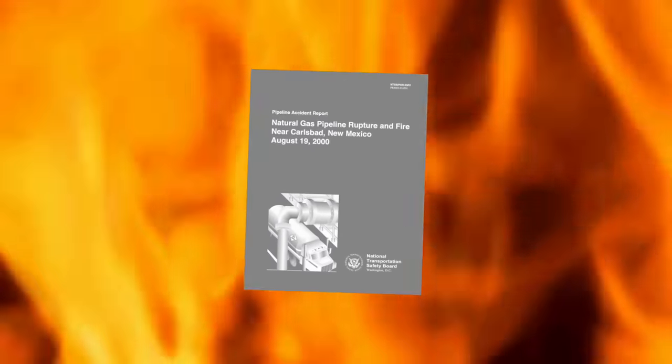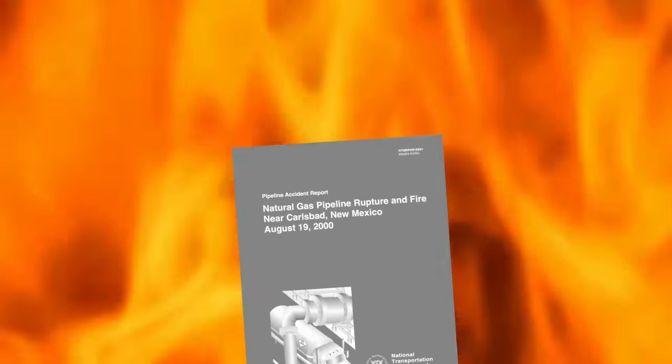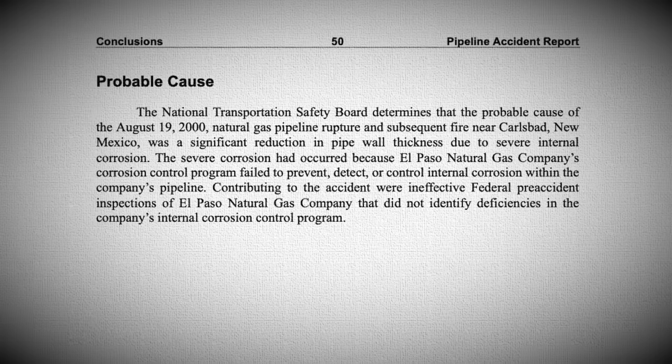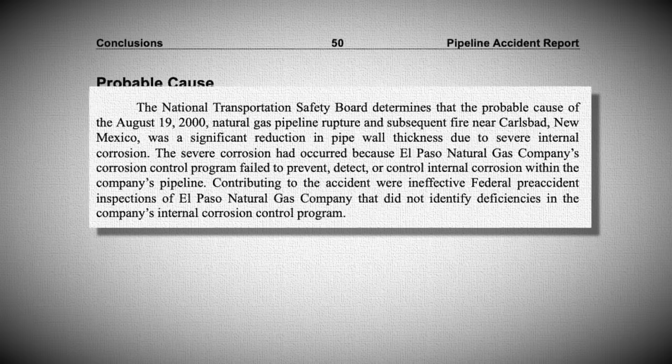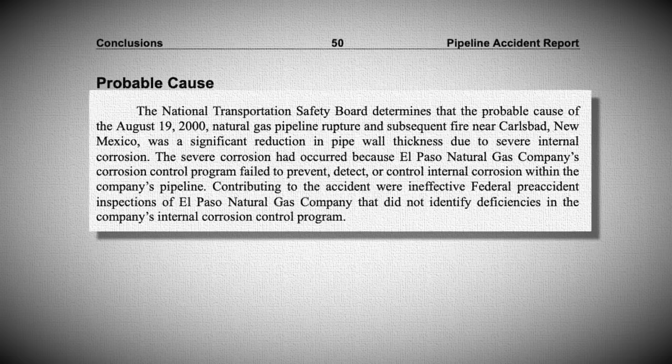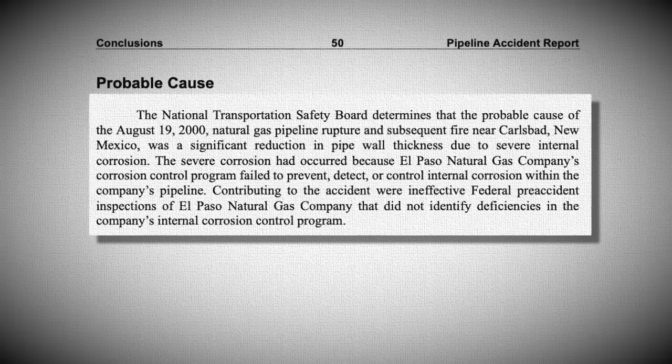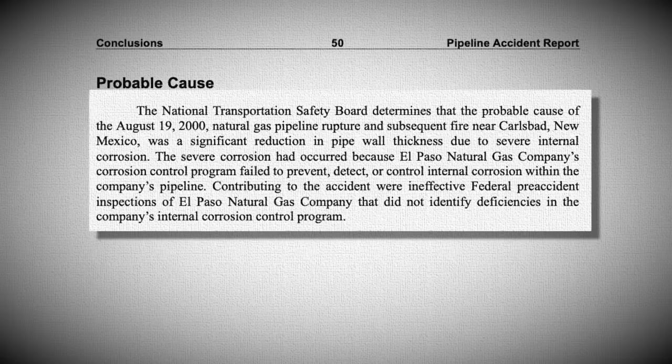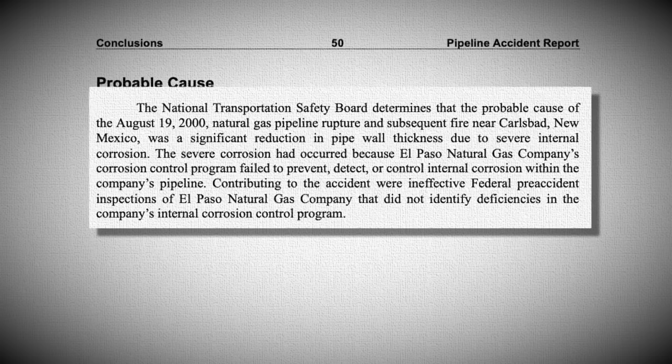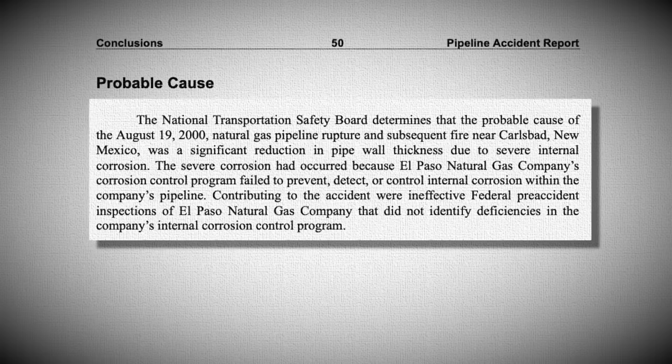The NTSB would release their report into the disaster, which found internal corrosion to be the most likely cause of the pipe's failure. It also blamed the EPNG for not having adequate corrosion detection and monitoring, as well as the particular section of pipes lacking pigging. They would say in their probable cause section: The NTSB determines that the probable cause of the 19th August natural gas pipeline rupture near Carlsbad, New Mexico was a significant reduction in pipe wall thickness due to severe internal corrosion. The severe corrosion had occurred because El Paso Natural Gas Company's corrosion control program failed to prevent, detect or control internal corrosion within the company's pipeline. Contributing to the accident were ineffective federal pre-accident inspections of El Paso Natural Gas Company that did not identify deficiencies in the company's internal corrosion control program.